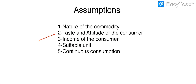The second assumption is the taste and attitude of the consumer. It means that the taste and attitude of the consumer does not change with each additional unit consumed. Next, we assume the income of the consumer does not change. When income increases, taste and attitude of the consumer can change and the nature of the commodity can be changed. So we assume income of the consumer remains the same.